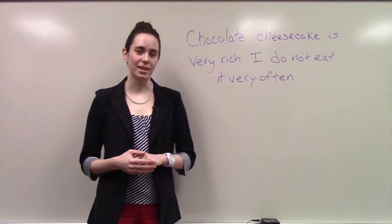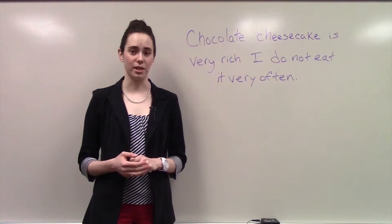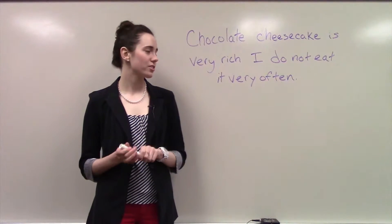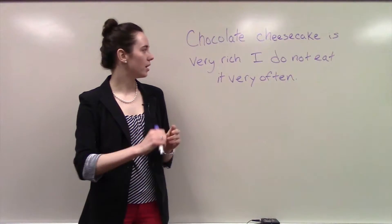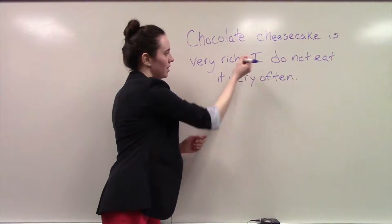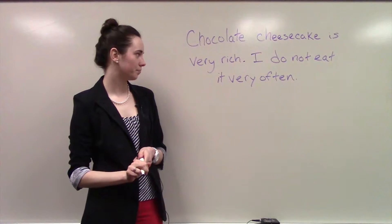There are three different ways independent clauses can be put next to each other. First, they can be separated by a period to indicate that they are two separate sentences.